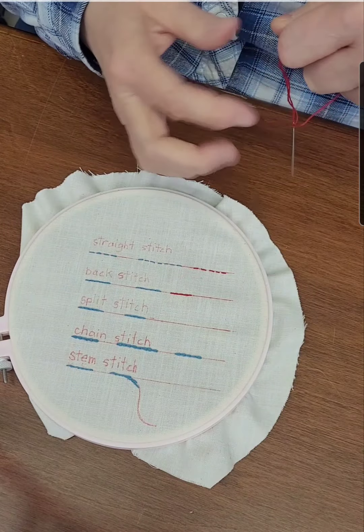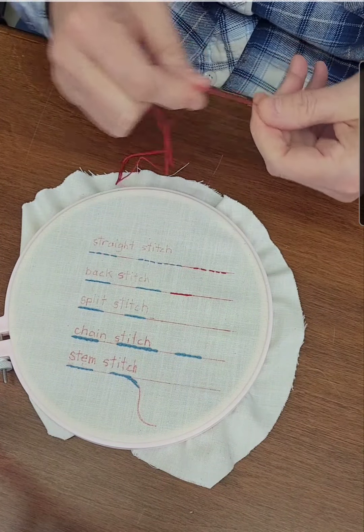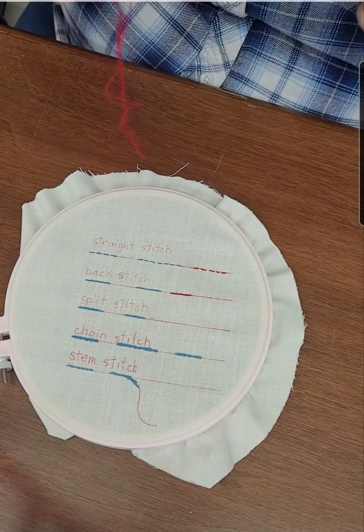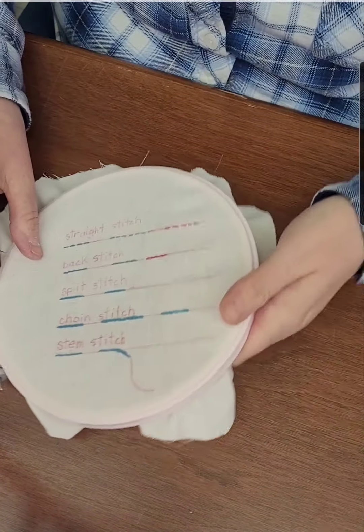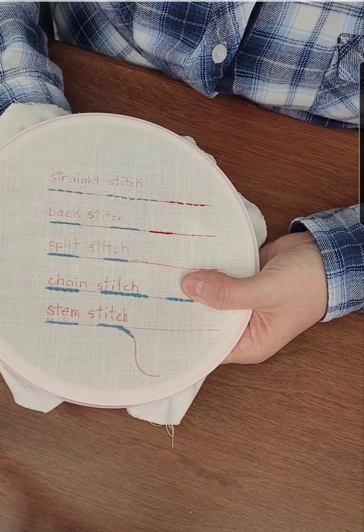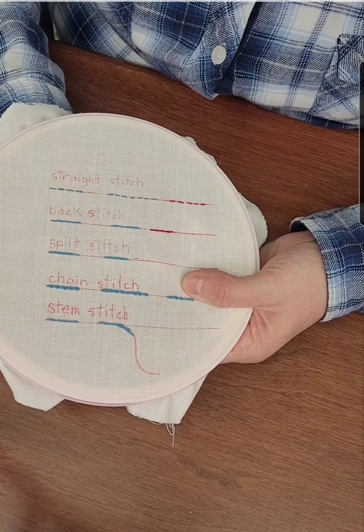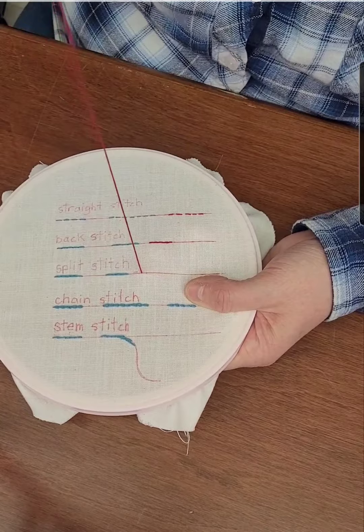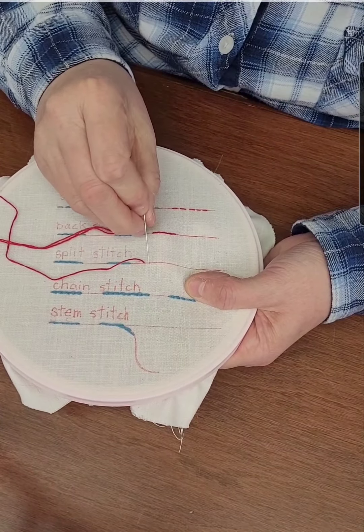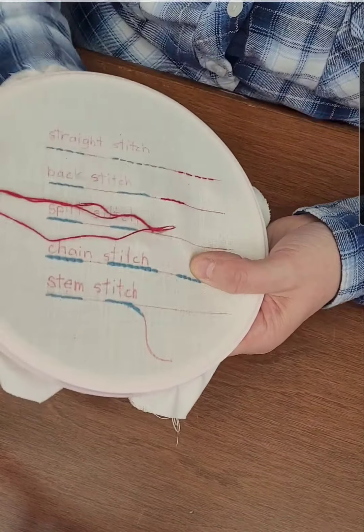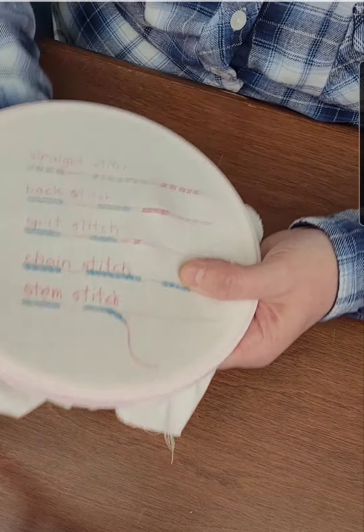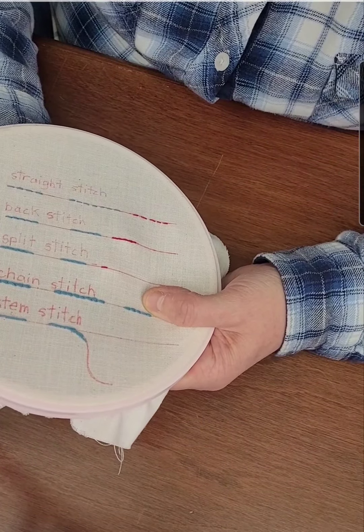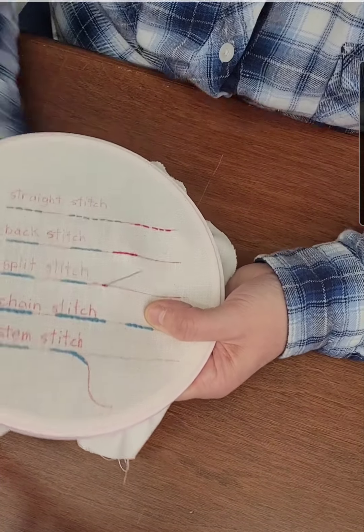So the next stitch is called the split stitch and that's because you make a stitch and then you go back and your needle comes up within the strands of your thread. So you come up and you make one full stitch and down. And then for the split stitch you're going to come up in the center of this stitch, pull it up.